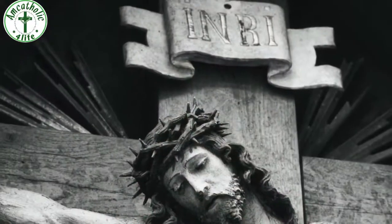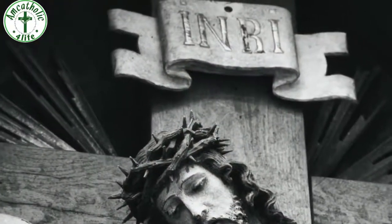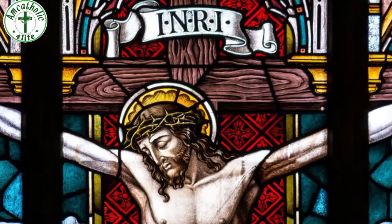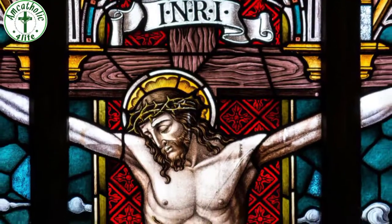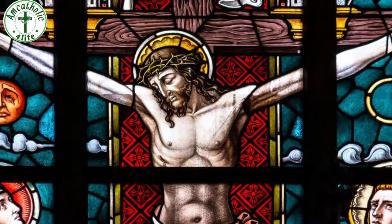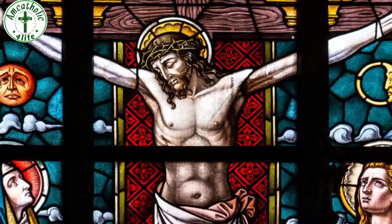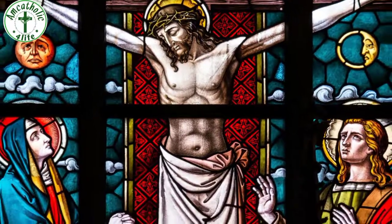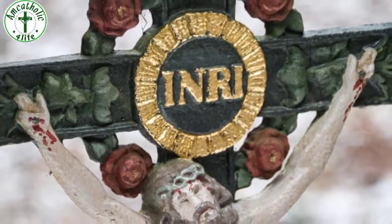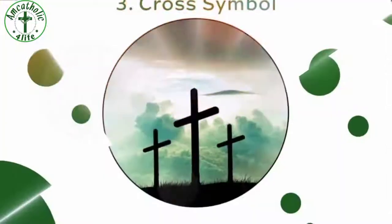On the upper side of the crucifix you see the letters INRI carved into the wood. They are a short form of the Latin phrase 'Iesus Nazarenus Rex Iudaeorum,' which means 'Jesus of Nazareth, King of the Jews.' These are the letters that Pilate ordered to be placed on the cross that Jesus was crucified on.